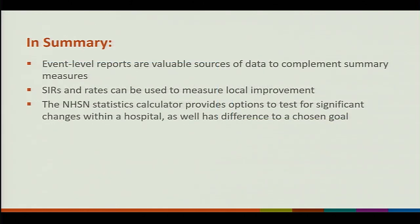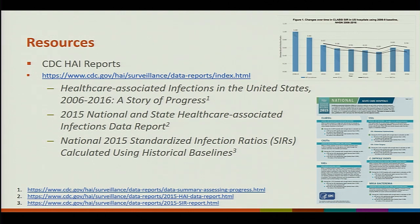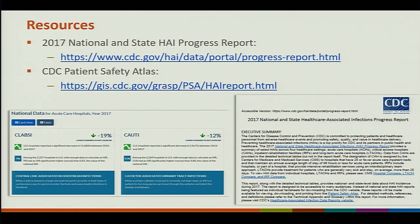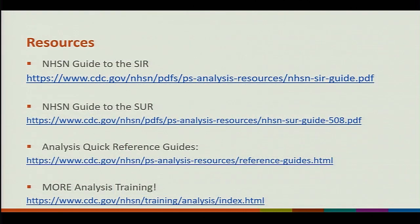In summary, we talked about many event-level reports valuable when looking at your SIRs. SIRs and rates can be used to measure local improvement. The statistics calculator provides many options so you can have statistical evidence to see if changes have occurred in your hospital as well as differences from a goal. The CDC HAI reports are useful not only to see how we've been doing nationally but also to see how we've presented and interpreted data. Our 2017 National and State HAI Progress Report was just published last week — I encourage you to visit it.